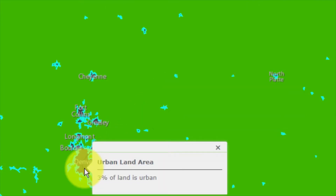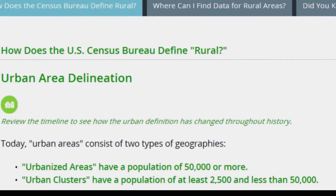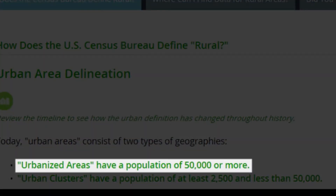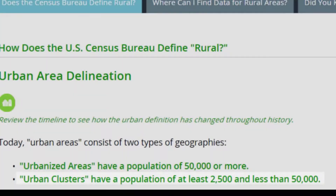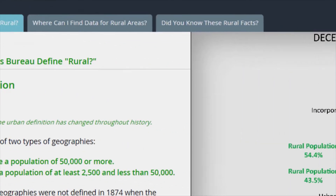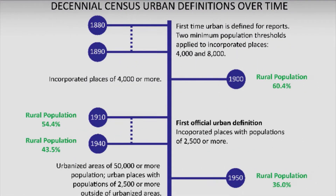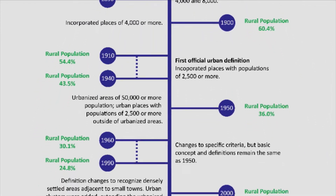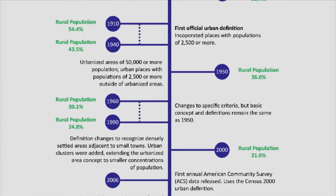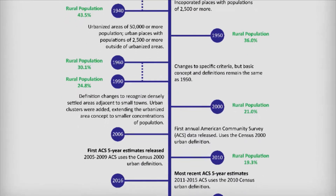A very small percentage is urban. Today's urbanized areas have populations of 50,000 or more. Urban clusters have populations of less than 50,000 but at least 2,500. This time chart illustrates how the definition of urban has changed since 1880.